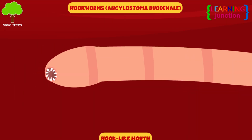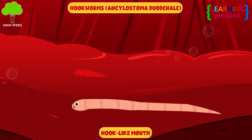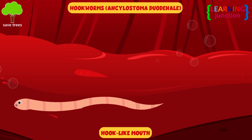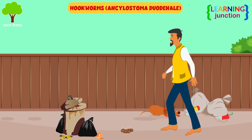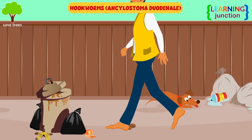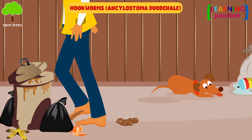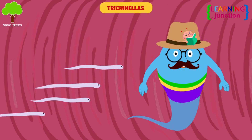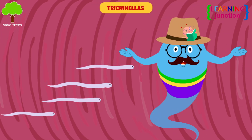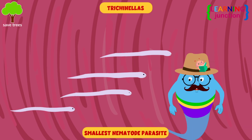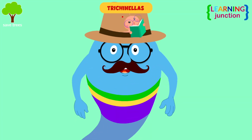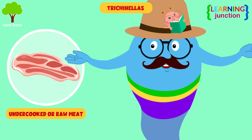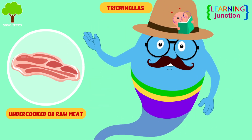Hookworms. They have hook-like mouths, which they use to attach to intestine walls and feed. Hookworm infection is acquired through skin exposure to larvae and soil contaminated by human feces. Trachonella — Trachonella spiralis is the smallest known nematode parasite of humans. This parasitic infection is caused by consuming undercooked or raw meat.